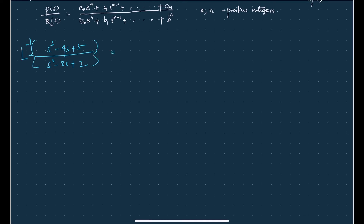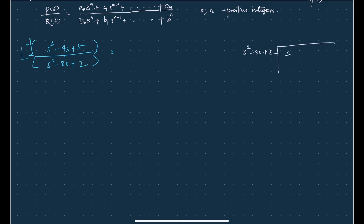Here the upper polynomial has degree 3 and the lower polynomial has degree 2, so it is an improper fraction. We perform long division: divide s³ − 4s + 5 by s² − 3s + 2. The first term of the quotient is s. Multiplying: s times (s² − 3s + 2) gives s³ − 3s² + 2s.